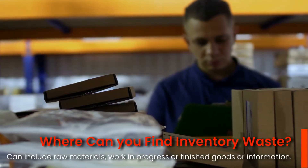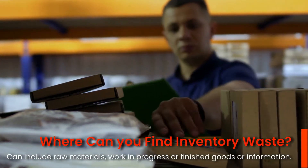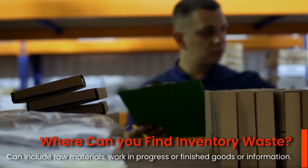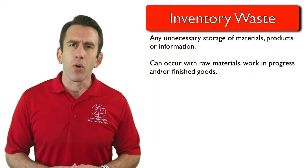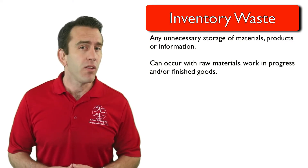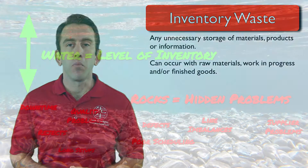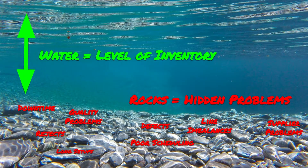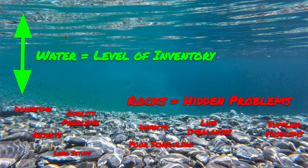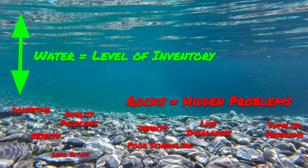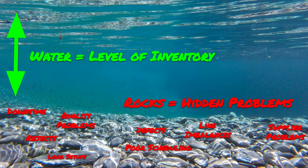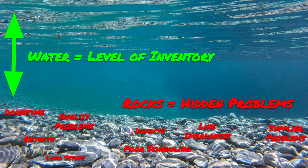This can include raw materials, work in progress, finished goods, or information. Buildup of inventory is sometimes a common practice in organizations, as inventory can help hide problems like defects, long setup and changeover times, machine and information downtime, late deliveries from your supply chain, and unbalanced production or schedules.